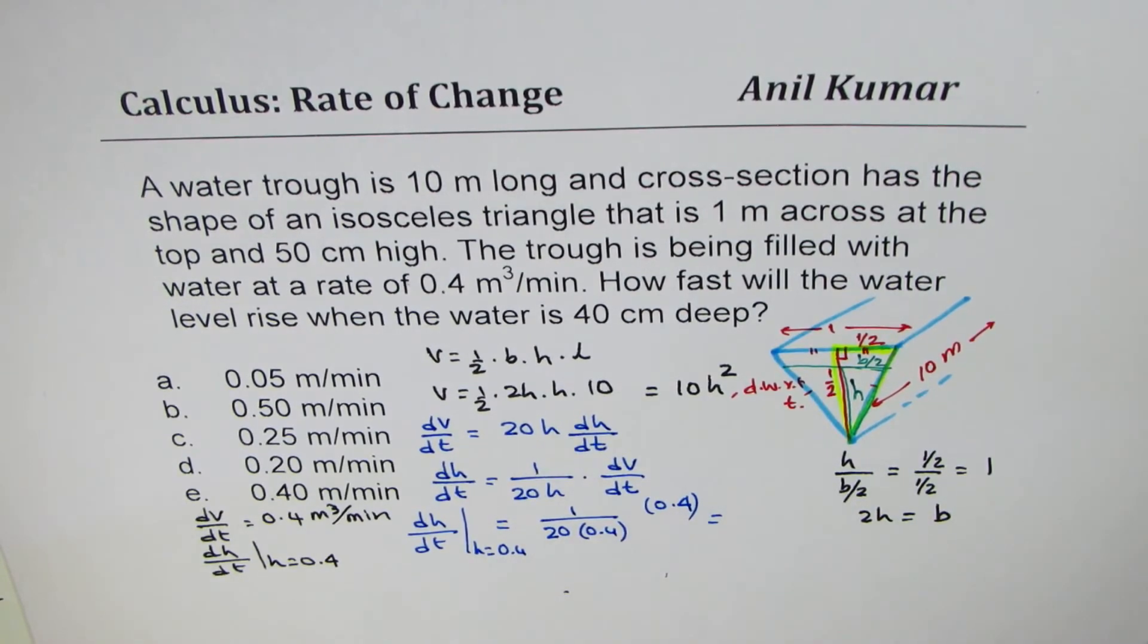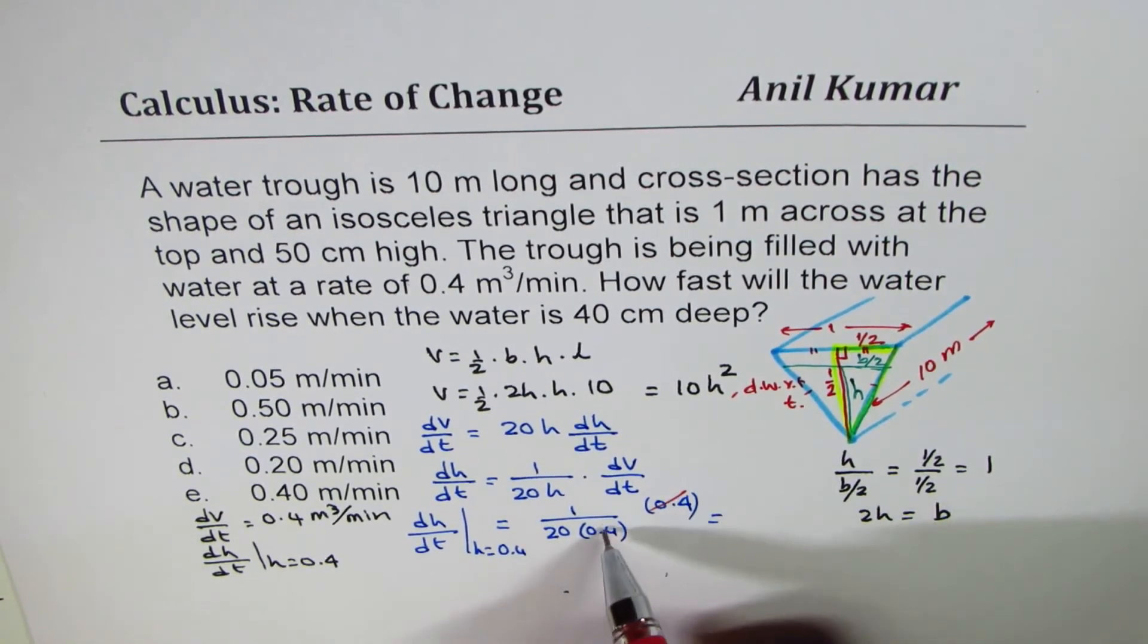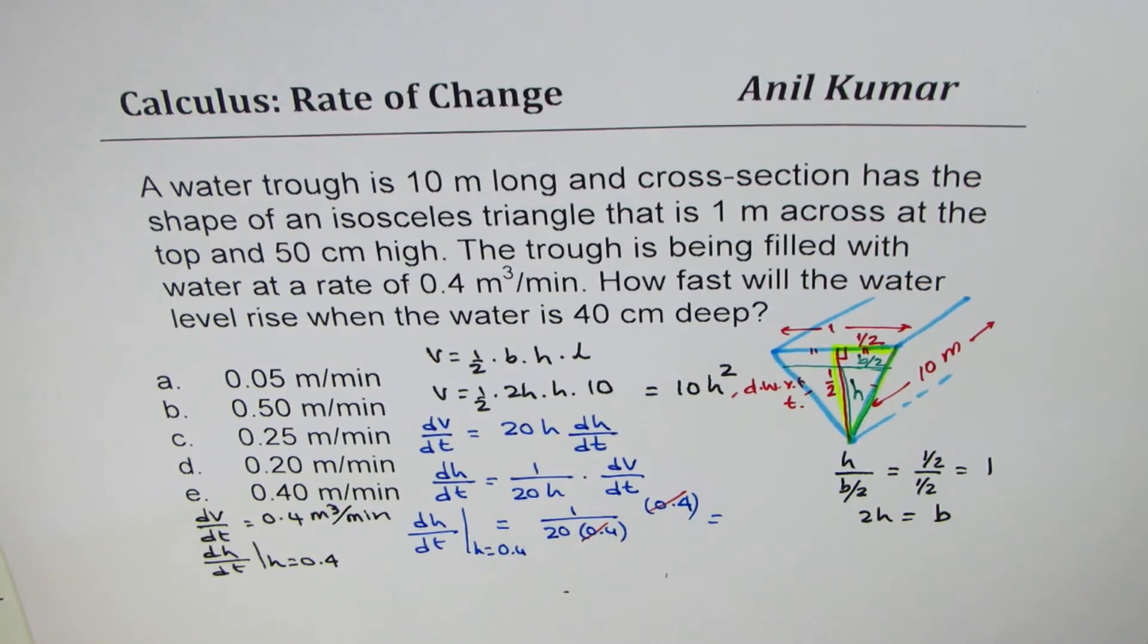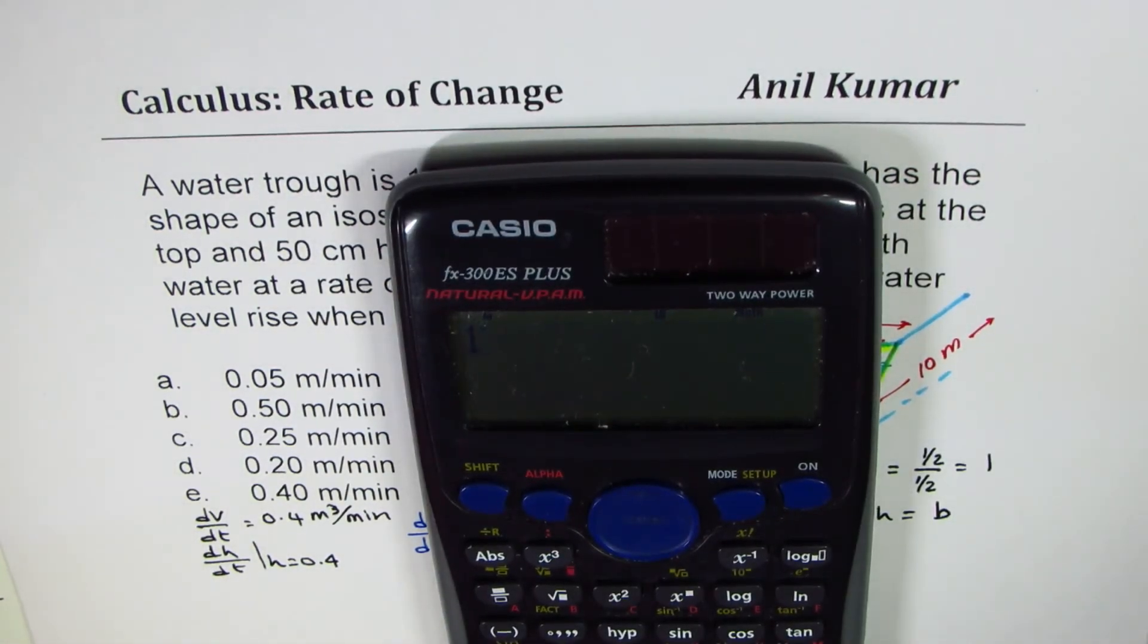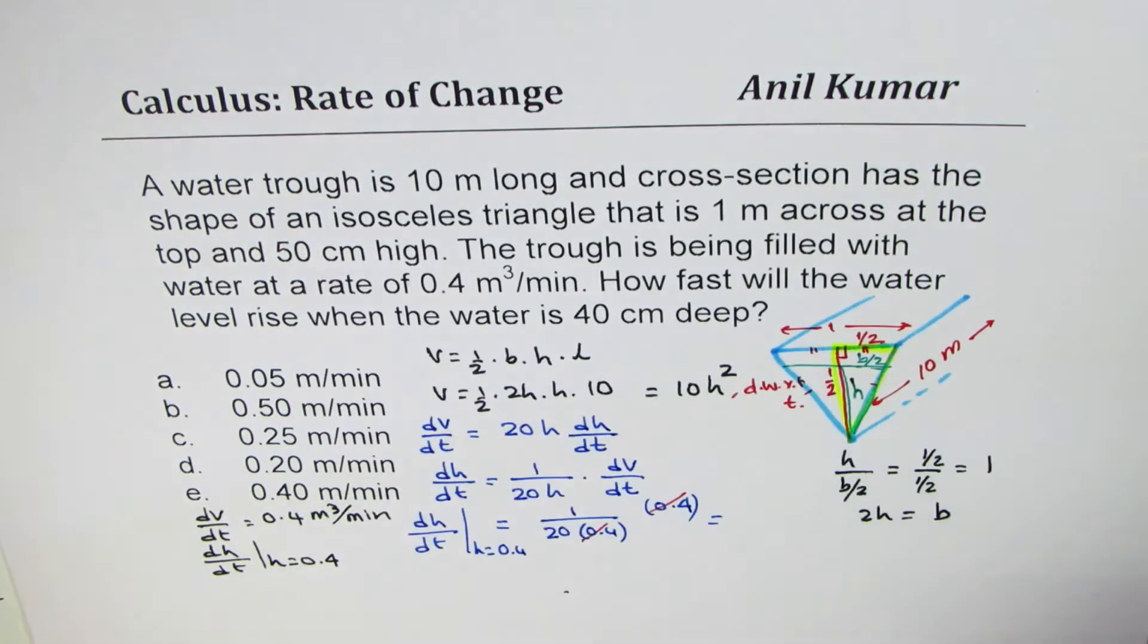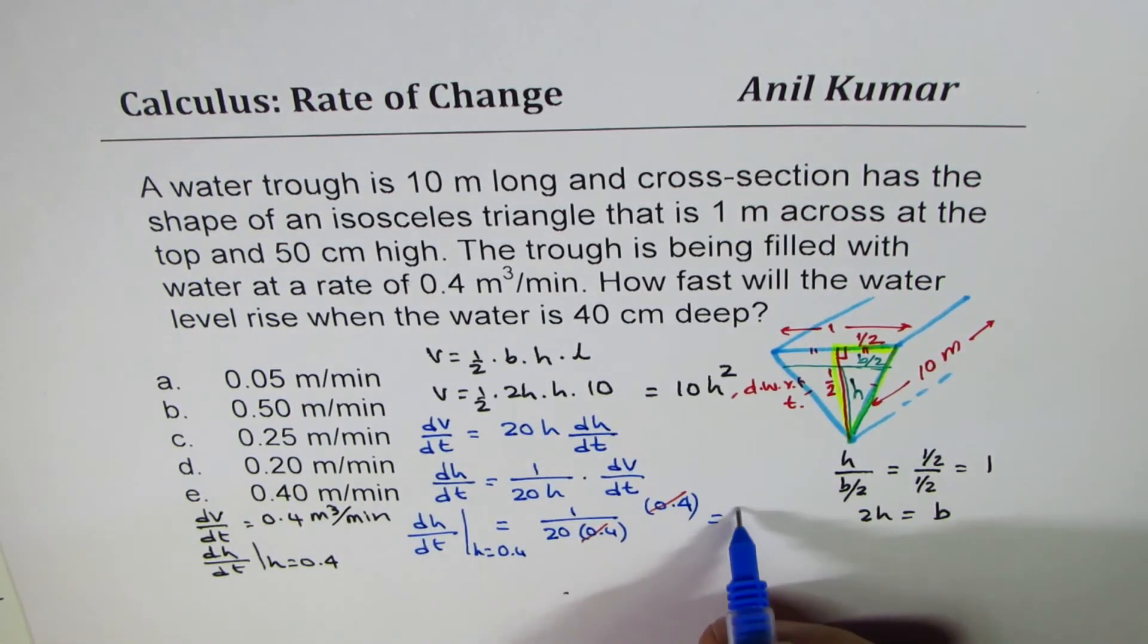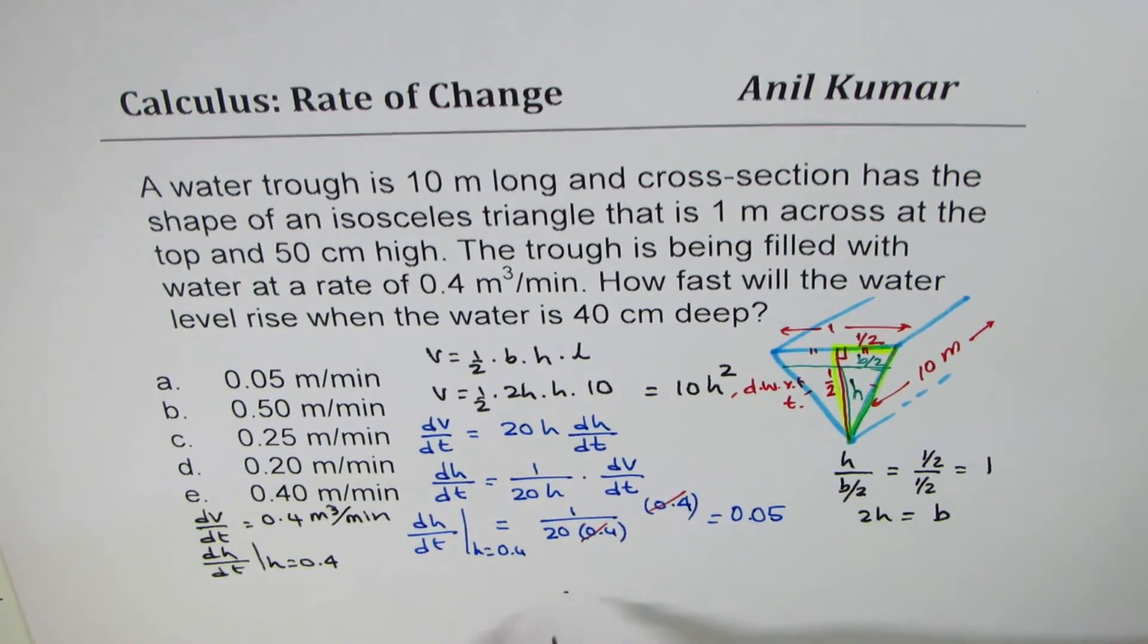Now 0.4, 0.4 cancel. So you get 1 over 20 in decimals. We have to find this answer. So we'll divide 1 by 20. So 1 divided by 20 gives us in decimals 0.05. So we get 0.05 as the answer.